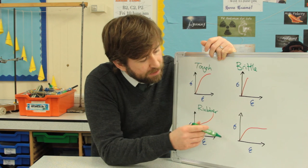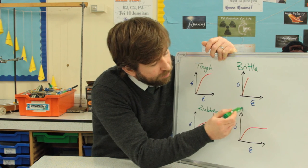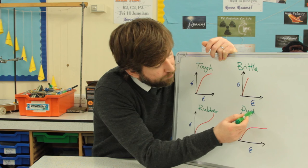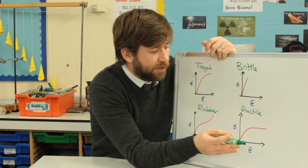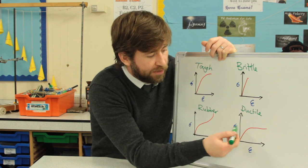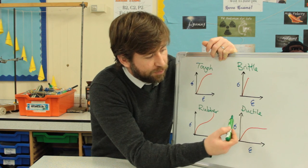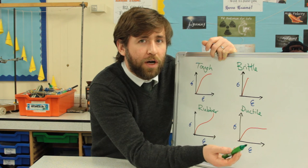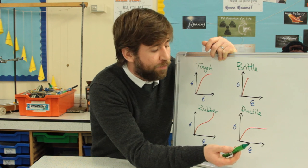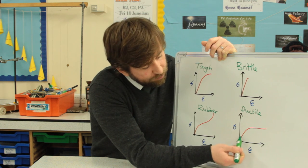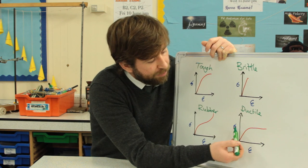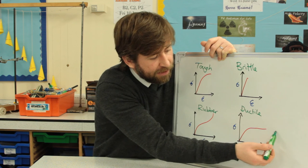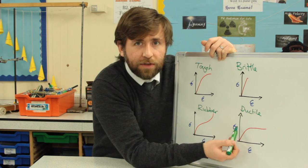And then, lastly here, this was our ductile material. And ductile is about being able to stretch the material for a little extra force. So we say it can be like drawn into wires, something which is ductile. So, it has a small elastic region. And then, after that, it begins to deform plastically for little extra stress.